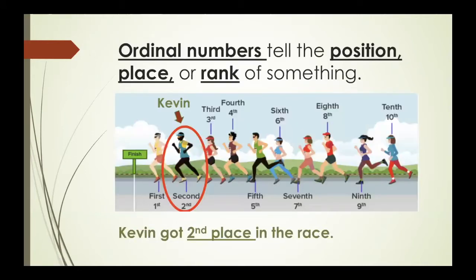Ordinal numbers tell the position, place, or rank of something. For example, look at the runner named Kevin. There are one, two, three, four, five, six, seven, eight, nine, ten runners. Kevin is in second place. He is the second out of ten runners. Kevin got second place in the race.